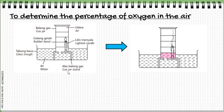Here we have an activity to determine the percentage of oxygen in the air. We have a lighted candle placed in an inverted gas jar, and the gas jar is divided into five equal parts — one, two, three, four, and five. We draw the divisions using a marker, and then we observe what happens to the water level when the flame of the candle goes out.